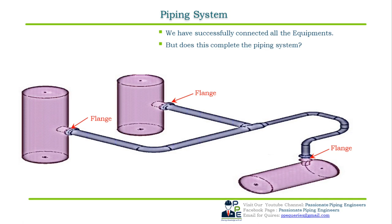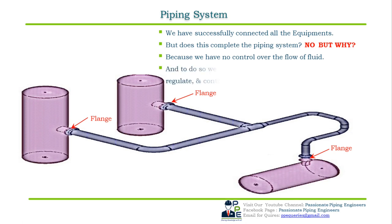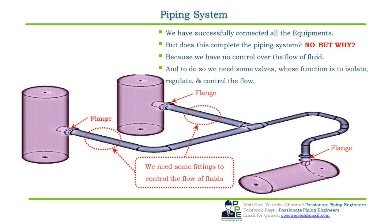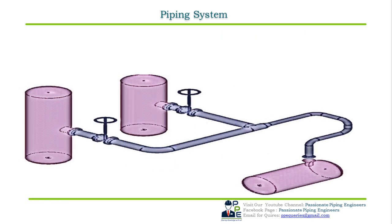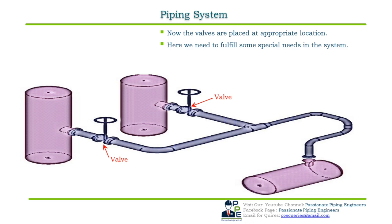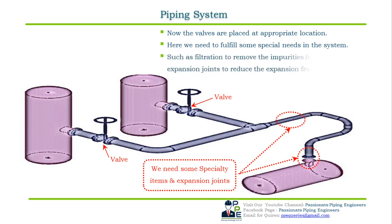But does this complete the piping system? No — because connecting pipes to equipment is not sufficient, as we have no control over the flow of the fluid. To do so, we need some valves, whose function is to isolate, regulate, and control the flow. The valves are placed at appropriate locations. The fluid also comes with some impurities which must be removed from the final product, so we need specialty items such as a strainer for filtration.